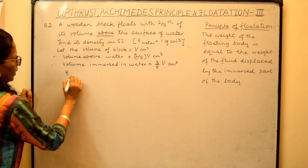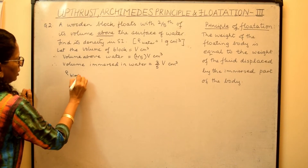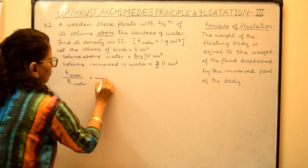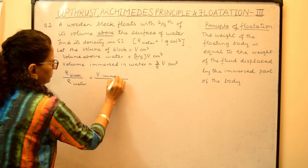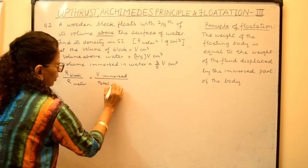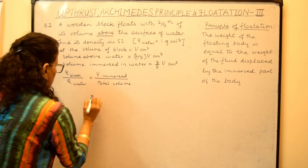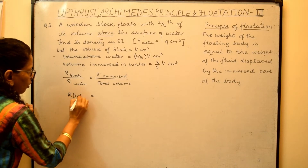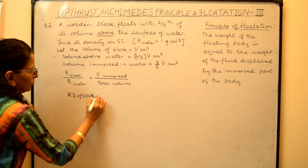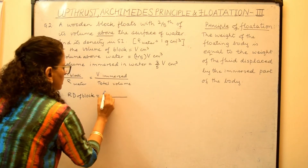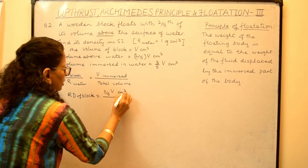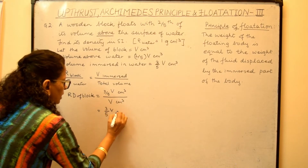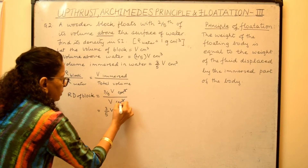Now we will use our formula. Density of solid — in this case, density of block — upon density of liquid — density of water — is equal to volume immersed upon total volume. Volume immersed is three-fifths of V cm³, and the total volume is V cm³. Rearranging the terms, we have three-fifths of V multiplied by 1/V; the cm³ units get cancelled.